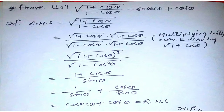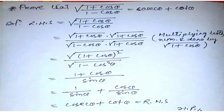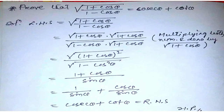Welcome to Sri Educom. Today we will discuss some problems of trigonometry which are very important for the upcoming board exam. Problem number one: prove that √((1 + cosθ)/(1 − cosθ)) = cosecθ + cotθ.